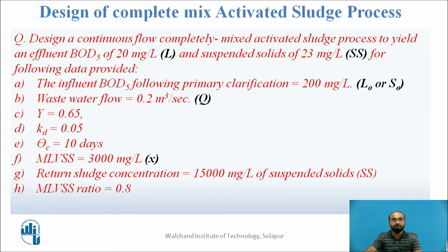This is the typical question we are working on, and we had completed five steps. The question is: design a continuous flow complete mix activated sludge process to yield an effluent BOD of 20 mg/L and suspended solids of 23 mg/L. Influent BOD (S0) = 200 mg/L, wastewater flow rate Q = 0.2 m³/s, Y = 0.65, KD = 0.05, theta_C = 10 days, MLVSS (x) = 3000 mg/L, return sludge concentration = 15,000 mg/L SS, and MLVSS ratio = 0.2.